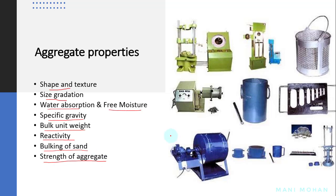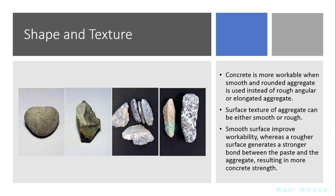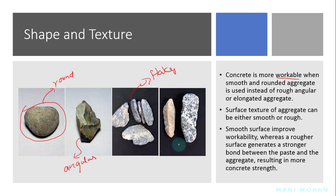Let us discuss each of these properties briefly. Shape and texture: the shape and texture of aggregate affects the properties of fresh concrete more than hardened concrete. We can see that this aggregate is round in shape, this aggregate is angular in shape, this aggregate is flaky, and this aggregate is elongated.